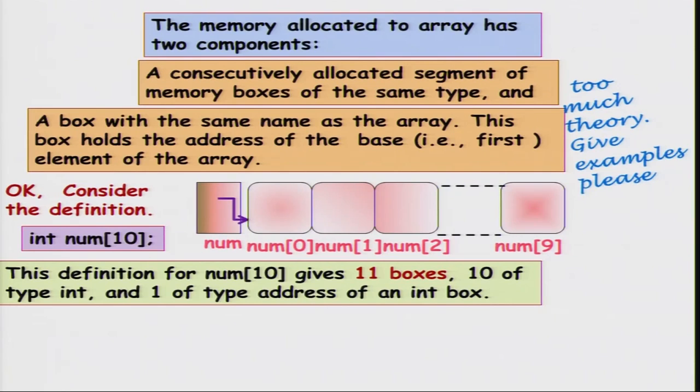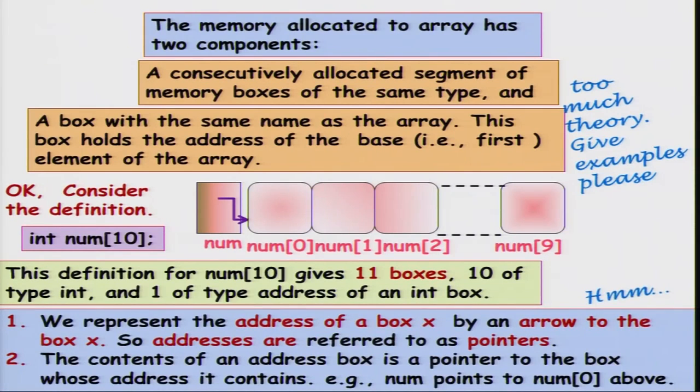Conceptually this gives 11 boxes: 10 integer boxes plus one box which holds the address of the first box. We represent the address of a box x by an arrow to the box x. So addresses are referred to as pointers, and pointers are variables which hold the addresses of other variables. That is an exact description of the concept of pointers.